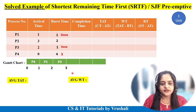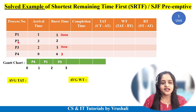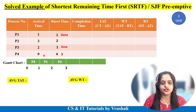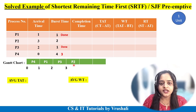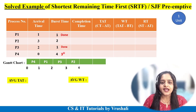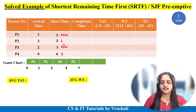Now check at time 3: P2 has arrived, and P4 is still present, so there are two processes — P2 and P4. P1 and P3 have already completed execution. Check which process has the smallest burst time: P2's burst time is 2 and P4's remaining burst time is 3. The smallest is 2, so the CPU executes P2 first for one unit of time: 3 plus 1 equals 4. P2 actually required 2 units, so from those 2 units, 1 has been executed and the remaining time is 1.